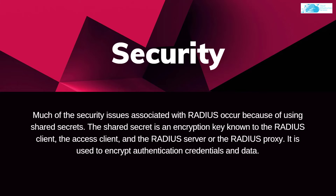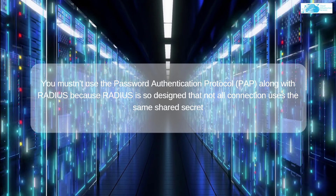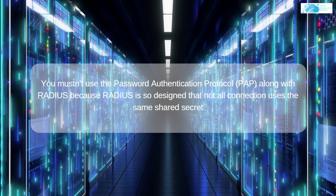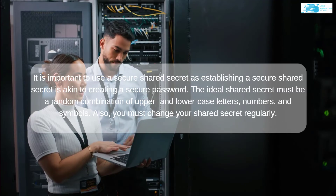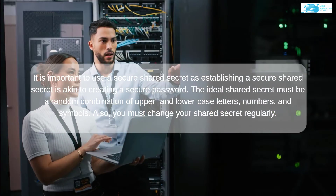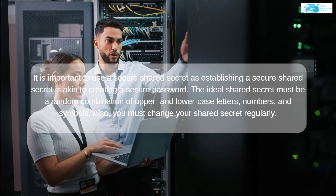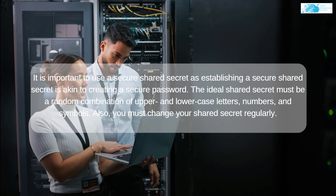The next practices are related to security. Much of the security issues associated with RADIUS occur because of using a shared secret. The shared secret is an encryption key known to the RADIUS client, the access client, and the RADIUS server or RADIUS proxy — it is used to encrypt authentication credentials and data. You must not use the Password Authentication Protocol (PAP) along with RADIUS, because RADIUS is designed so that not all connections use the same shared secret. It is crucial to use a shared secret that is a random combination of uppercase and lowercase letters, numbers, and symbols.